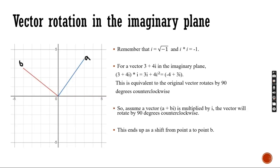Vector rotation in the imaginary plane. Since i equals the square root of negative 1, i squared equals negative 1. So for a vector 3 plus 4i in the imaginary plane, 3 plus 4i times i equals negative 4 plus 3i, which is the reversal of the original vector. This happens to be point B on the graph, and the original vector is point A.